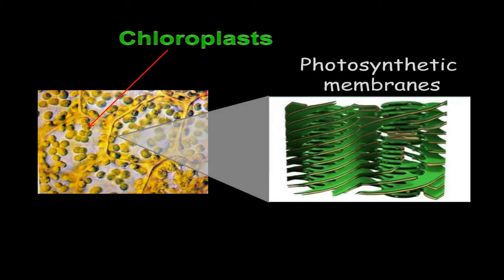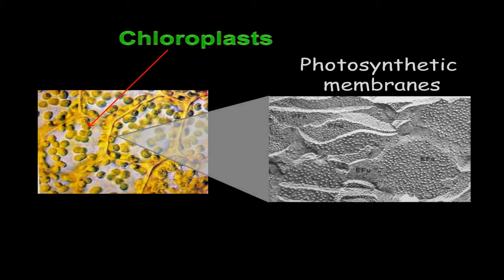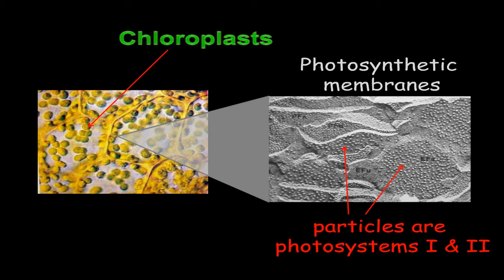Chloroplasts contain arrays of green membranous stacks, which contain the chlorophyll molecules that capture light for photosynthesis. These chlorophyll molecules are organized into molecular complexes called photosystems, which are visible as particles embedded in the photosynthetic membranes, as seen in this electron microscope image. Plants have two types of photosystems, called Photosystem I and Photosystem II. The structure of Photosystem I is shown in the following molecular animation.